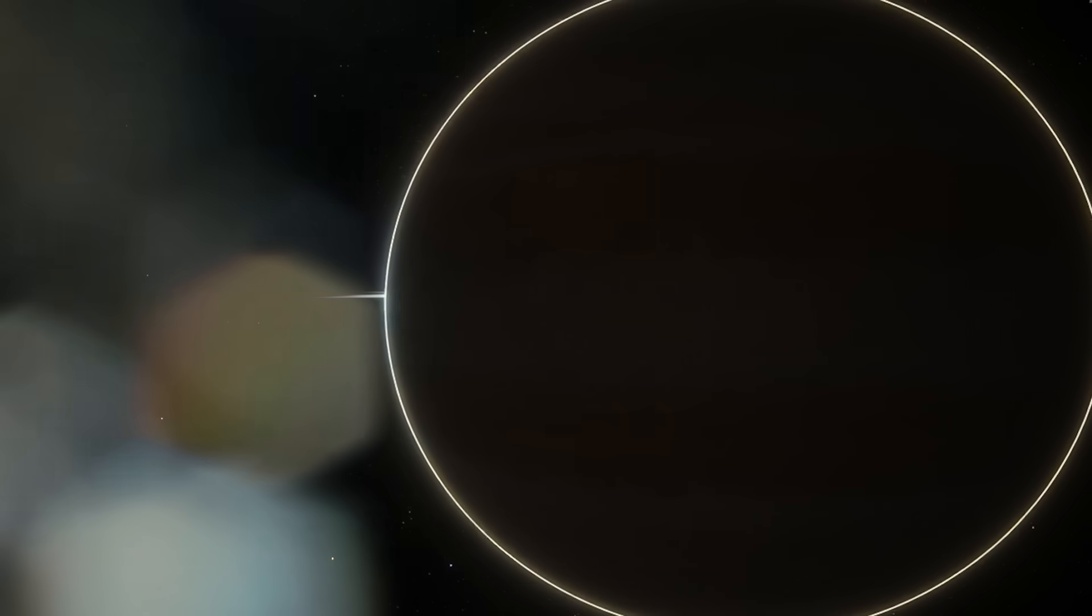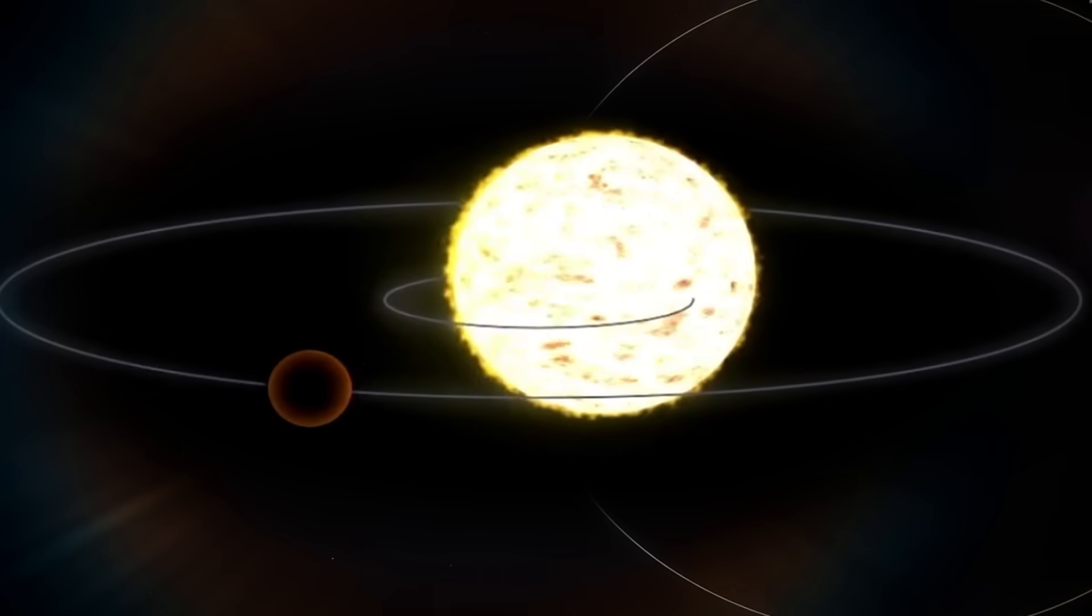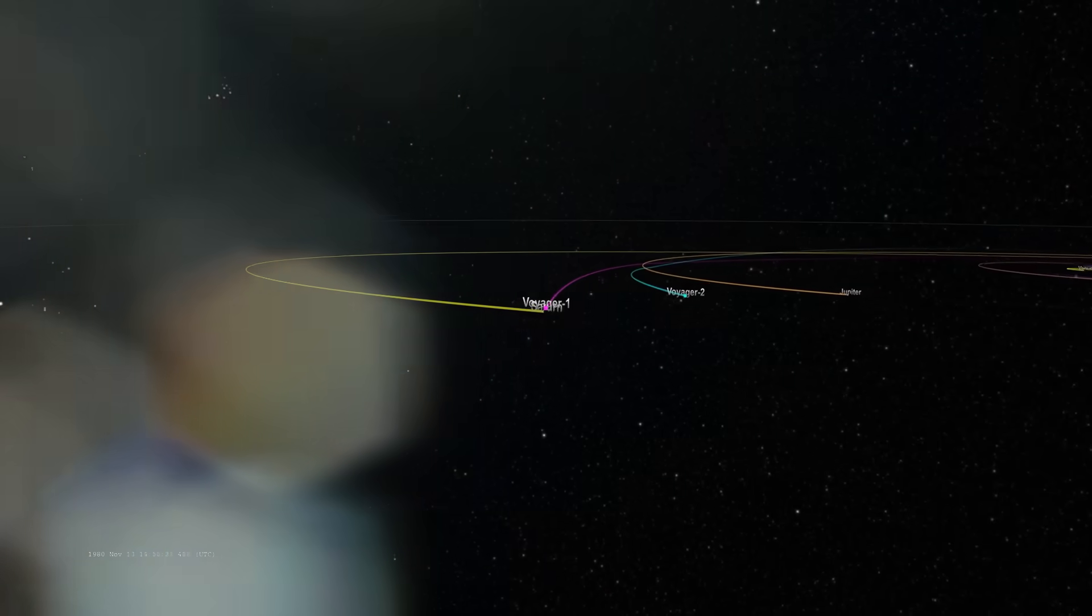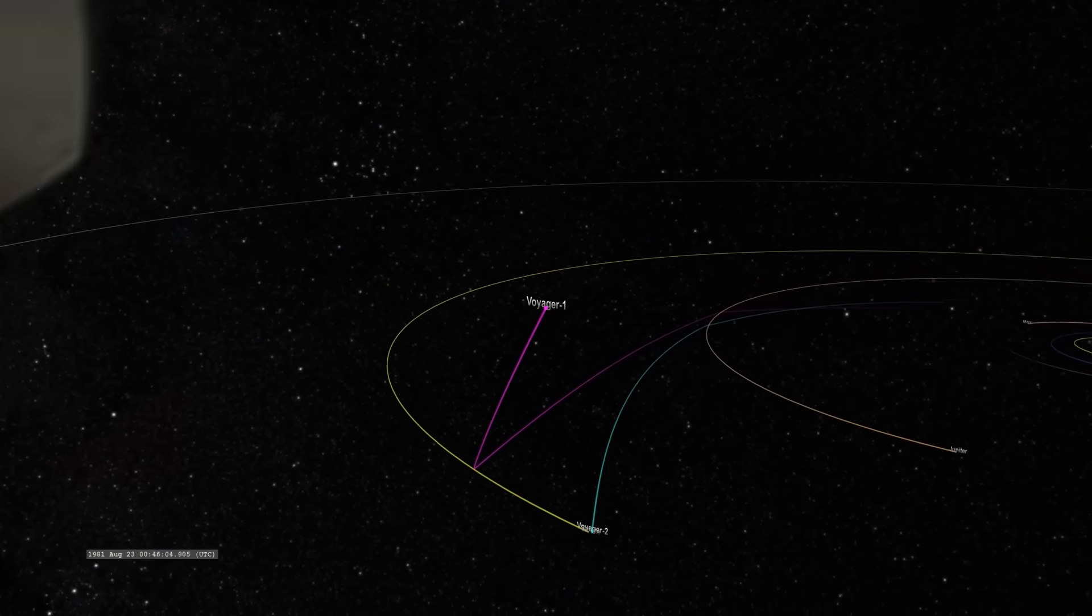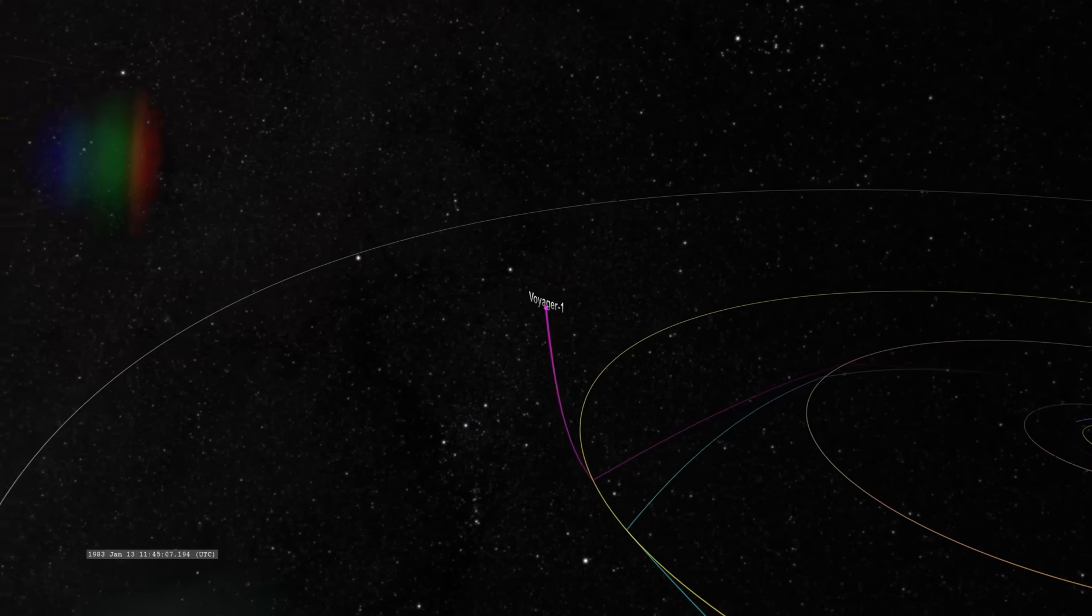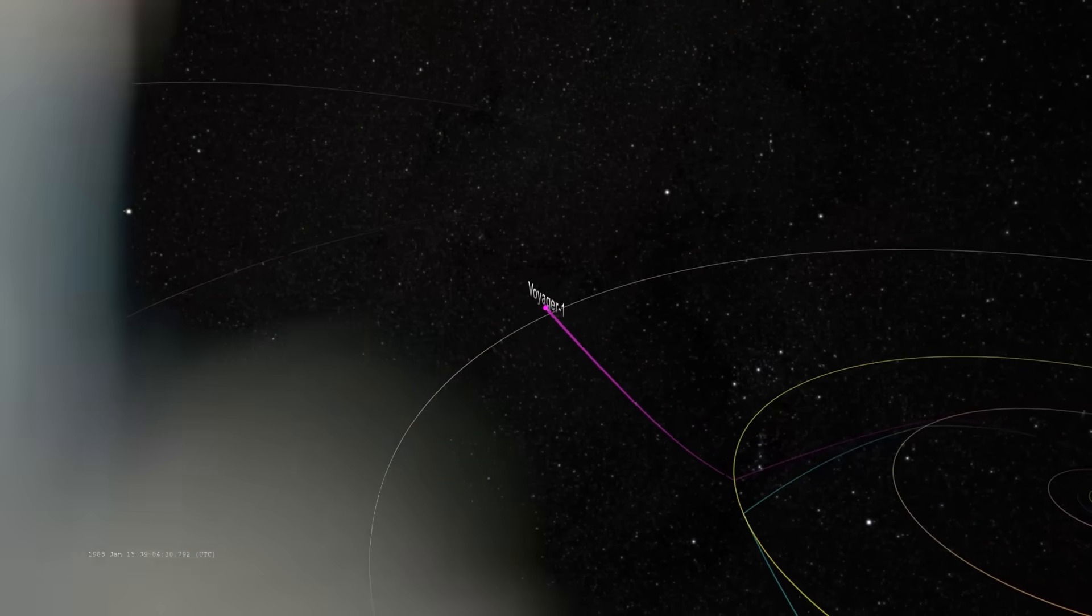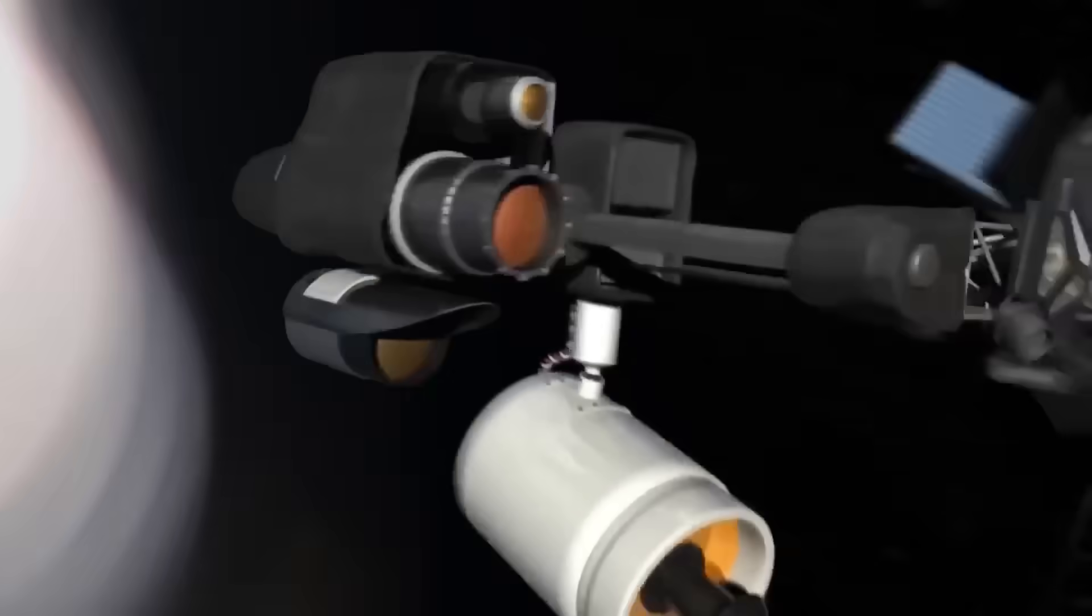Voyager 1 was never supposed to survive this long. It was designed for a planetary tour, not an interstellar pilgrimage. It was never supposed to send back data beyond the edge of the solar wind. And it was certainly never built to receive anything. It was meant to speak, to declare our presence to the stars with a golden record of whale songs, human laughter, and distant greetings. But now, decades after we last touched its frame, after it slipped into the void and disappeared into silence, it has done something no one predicted.